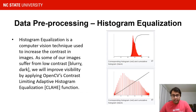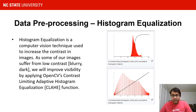Another step involved in data pre-processing is histogram equalization. This is a computer vision technique where we increase the contrast in the images, because some of our images are really dark, blurry, or have really low contrast. We are trying to enhance the contrast by equalizing the histogram, and we do this using OpenCV's contrast limiting adaptive histogram equalization (CLAHE) function.